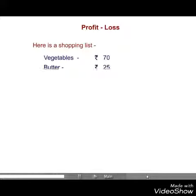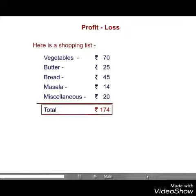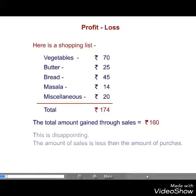70 rupees butter, 25 rupees bread, 45 rupees masala, 14 rupees miscellaneous, 20 rupees — total amount is equal to 174 rupees. So the total amount gained through sales is equal to 160 rupees. This is disappointing; the amount of sales is less than the amount of purchase.